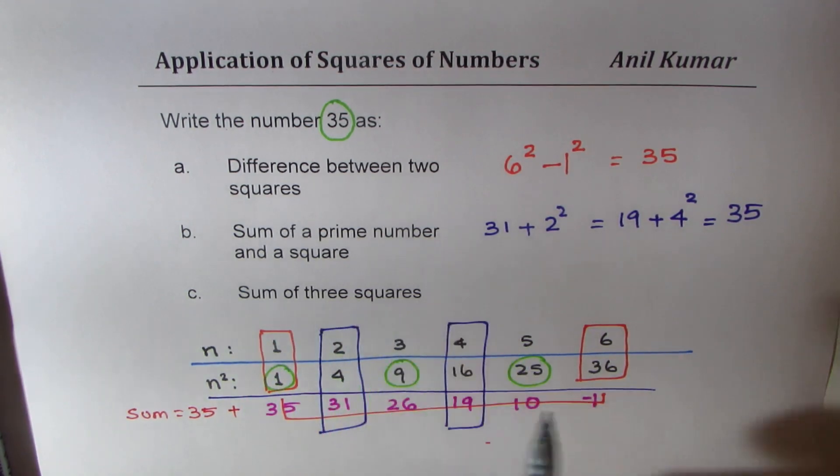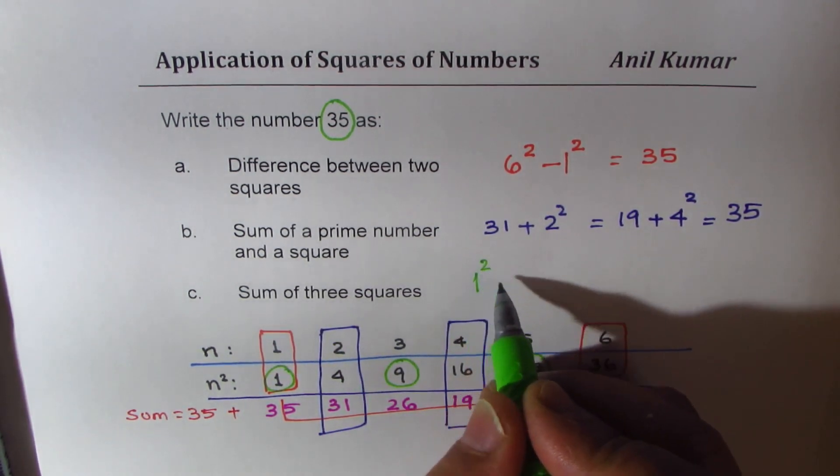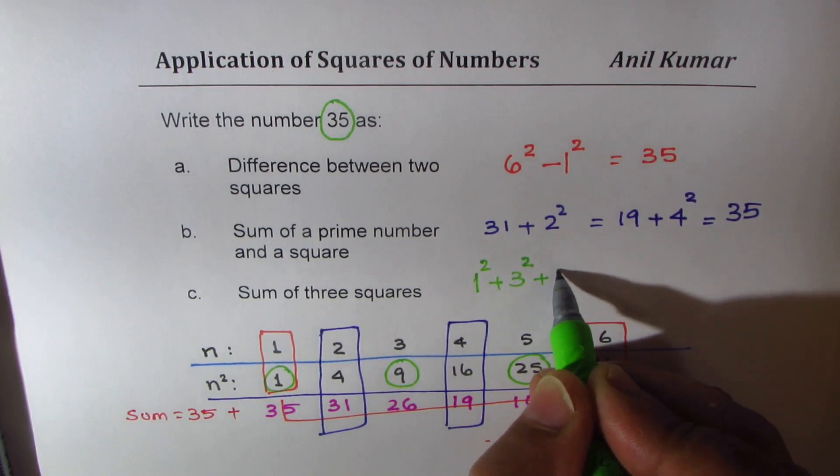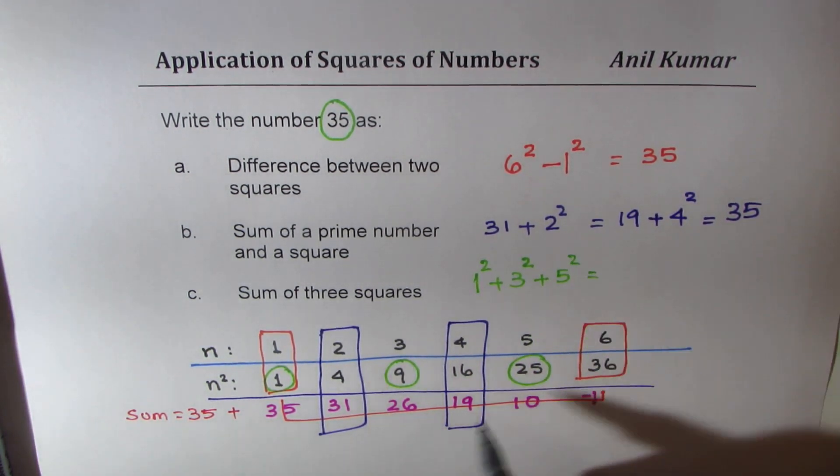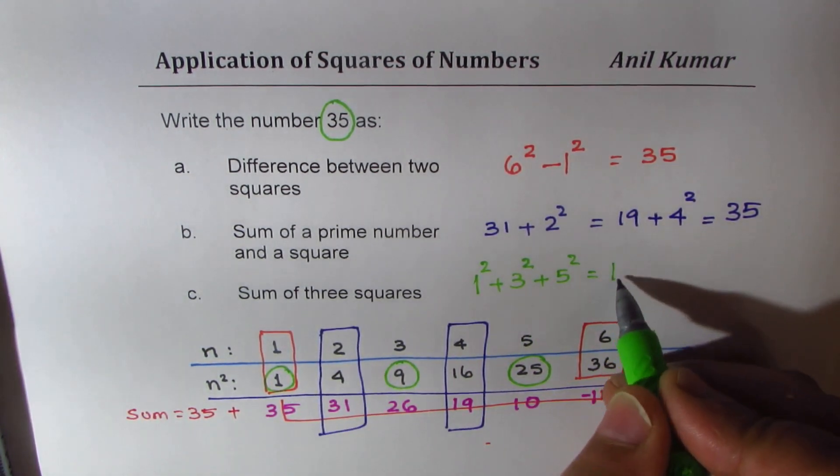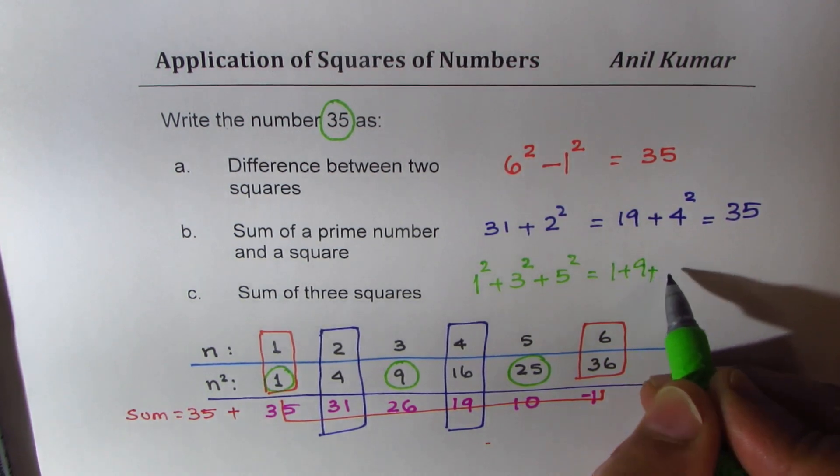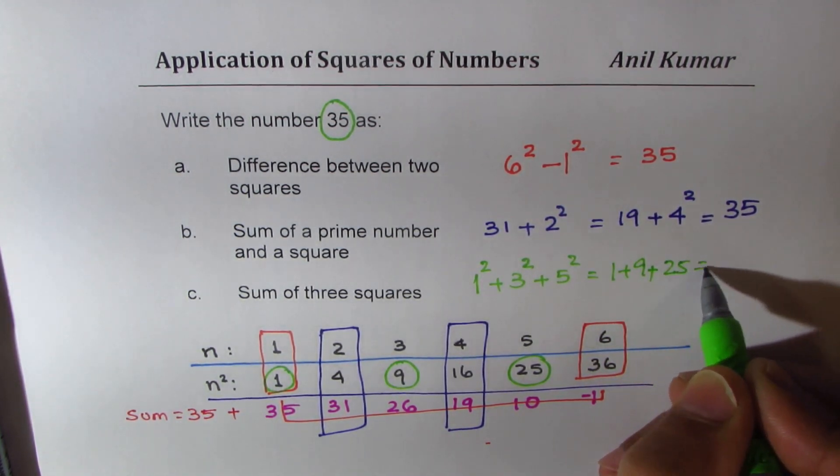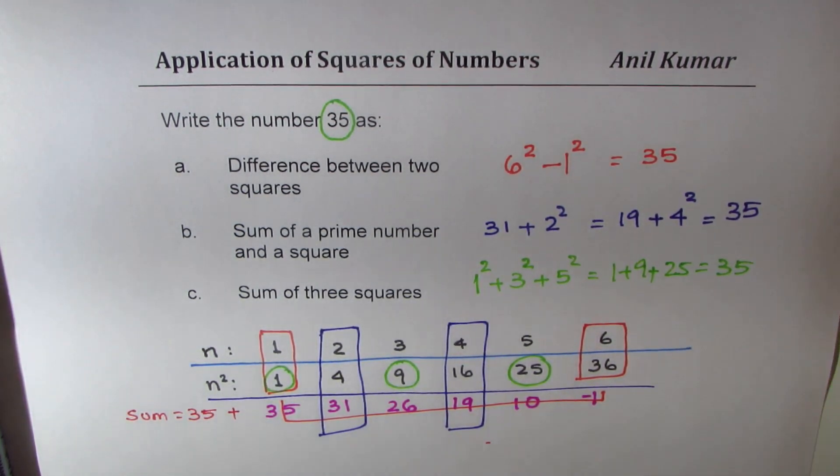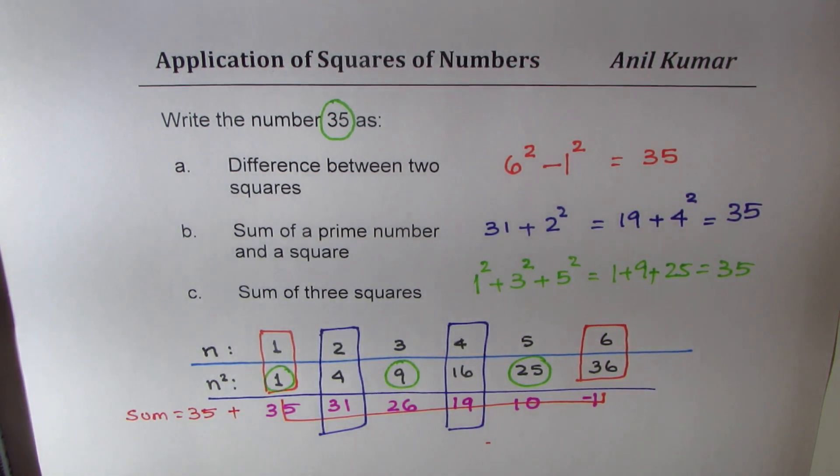So, sum of three squares means 1 square plus 3 square plus 5 square, which is equal to, as you can see, 1 plus 9, which is 10 plus 25, is 35. Do you see that? That is how you could get your answer.